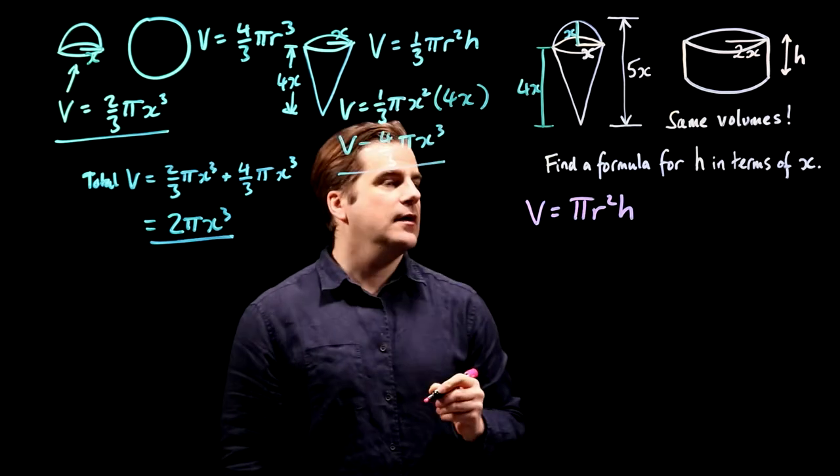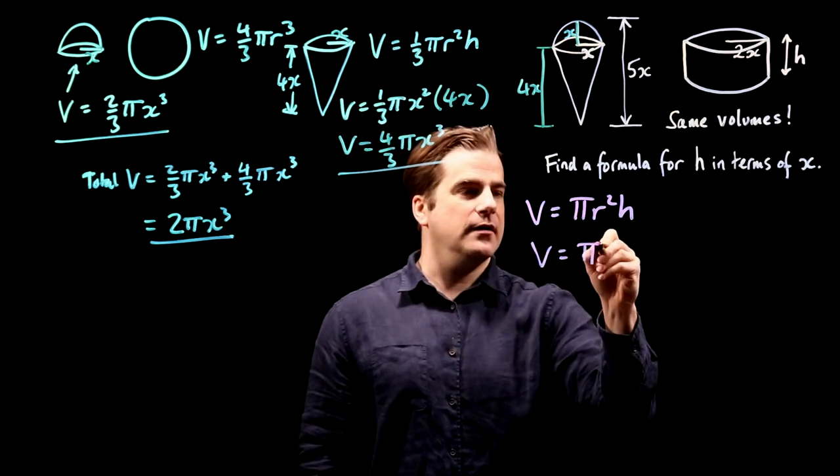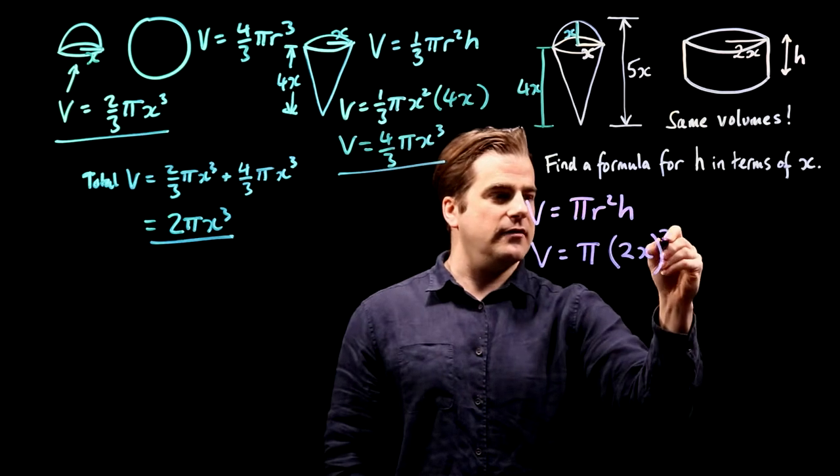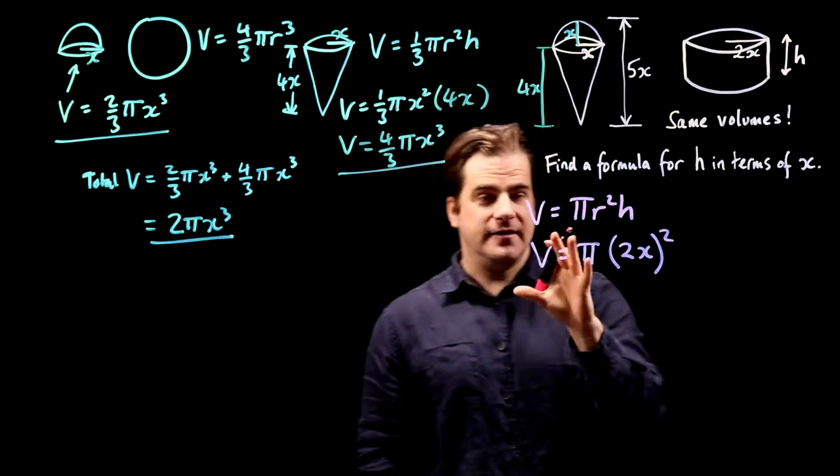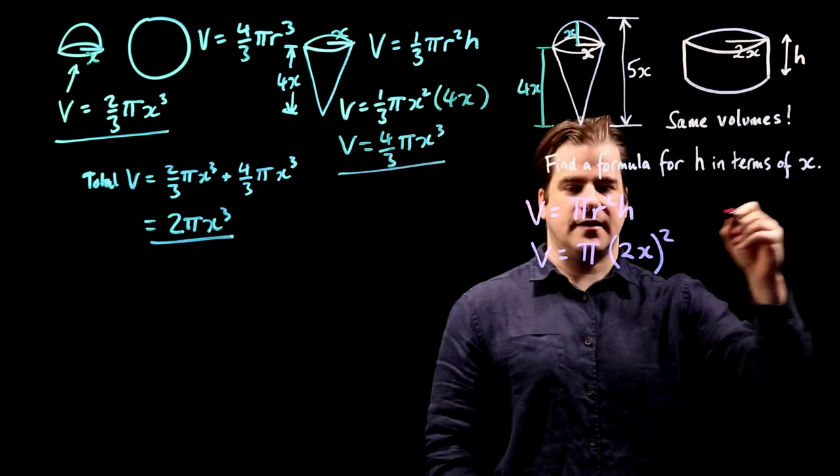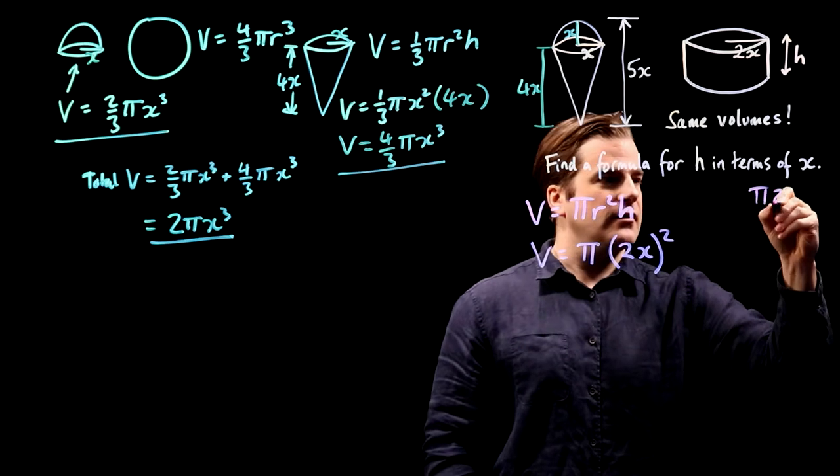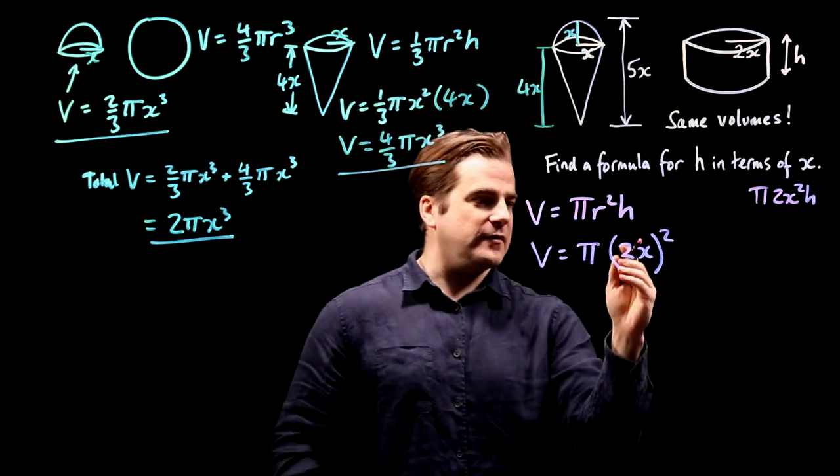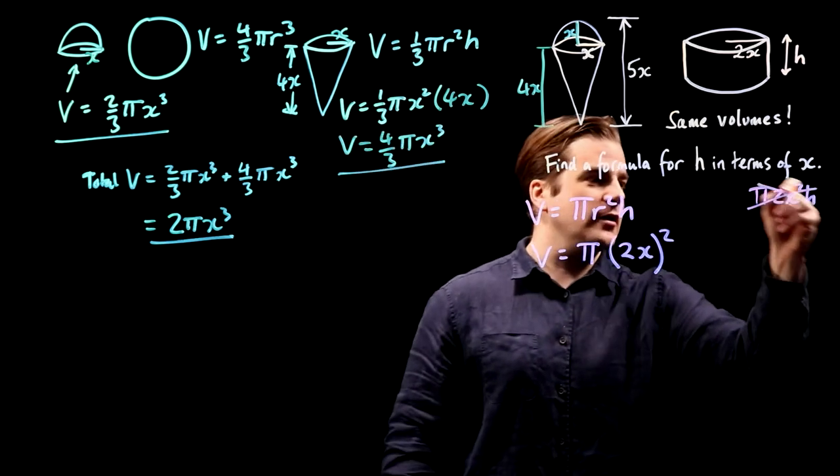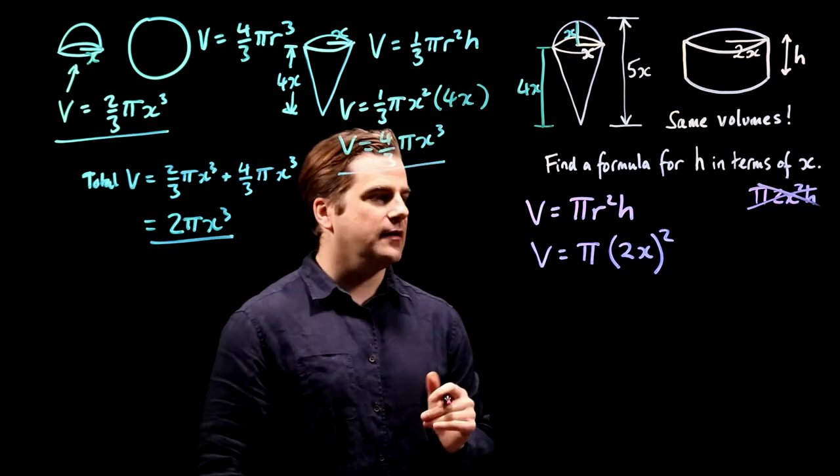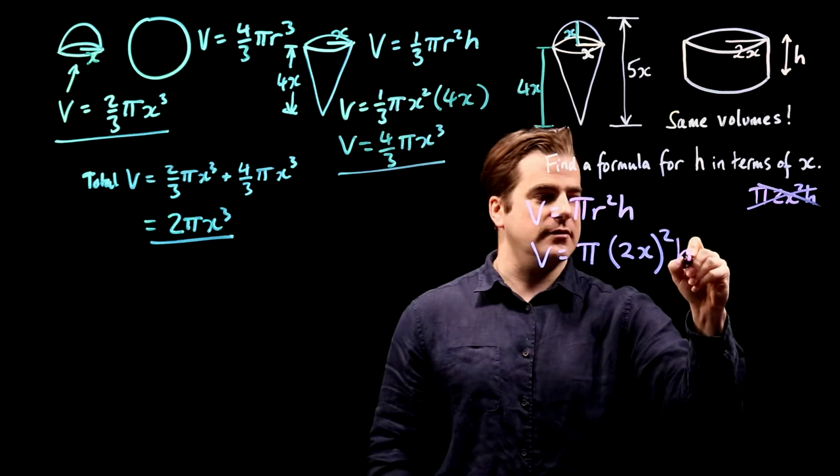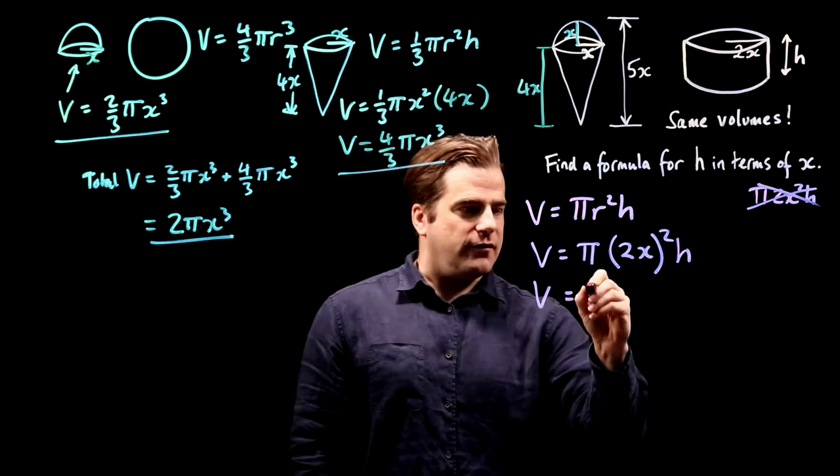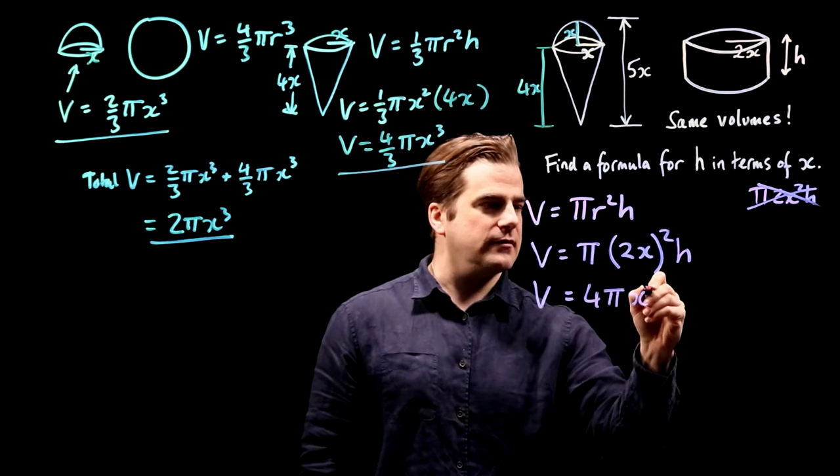So in our case, the volume is π, the radius is 2x. Always use brackets when subbing in, it's very easy to make this mistake. So our radius is 2x, therefore it's going to be π r² h. That's 2x squared, but 2x all squared is 4x². So don't fall into that trap. Use brackets when subbing in. So π r² times h, which is just h. So our volume is 4 π x² h.